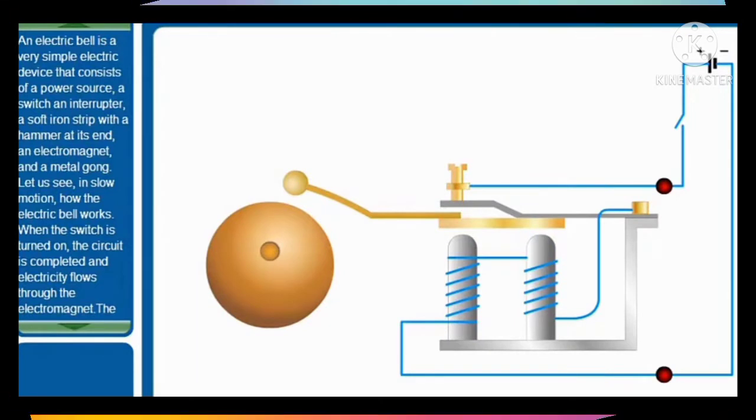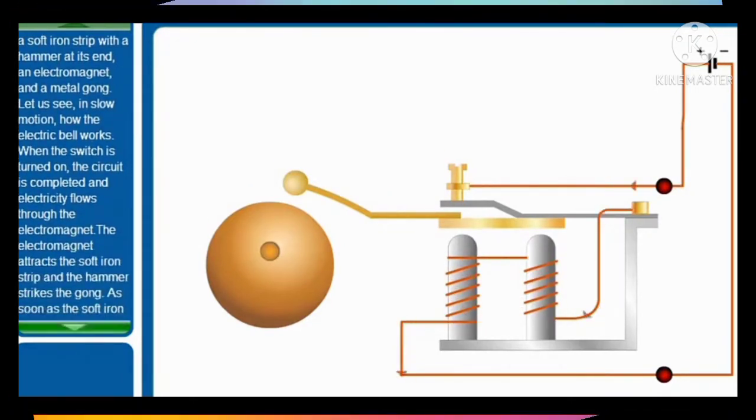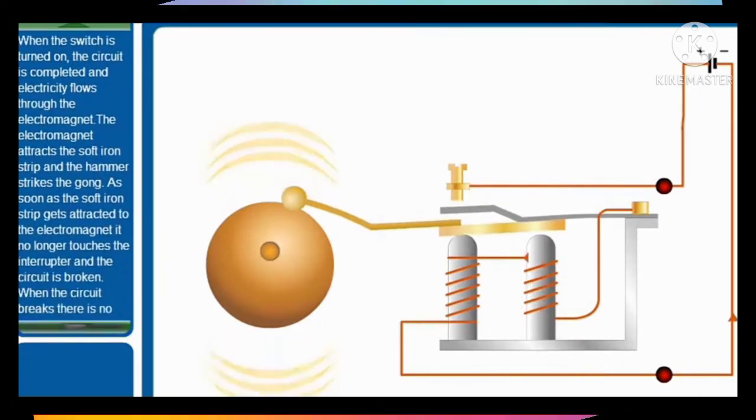Let us see in slow motion how the electric bell works. When the switch is turned on, the circuit is completed and electricity flows through the electromagnet. The electromagnet attracts the soft iron strip and the hammer strikes the gong.